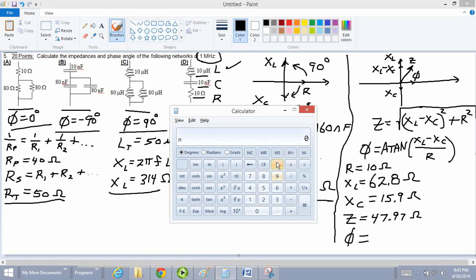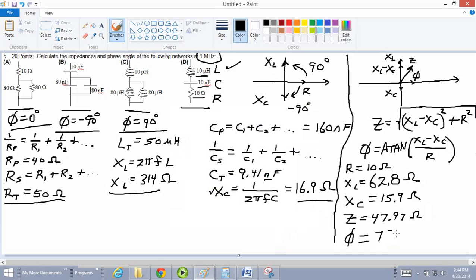Okay. Clear this away. Recall the memory. That is, this memory is XL minus XC. Divide this by the resistance, 10 ohms, equals, and then take the inverse tangent. And I got 77.97 degrees. That's really, it's almost straight up. It's dominated by XL, which is what we expect. So, well, I'm going to call this done and go on to the next problem.